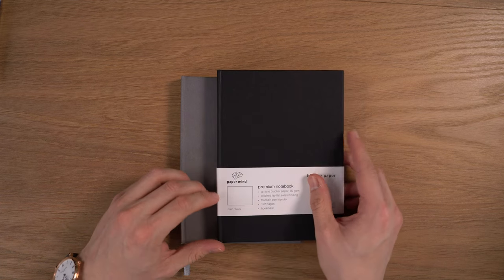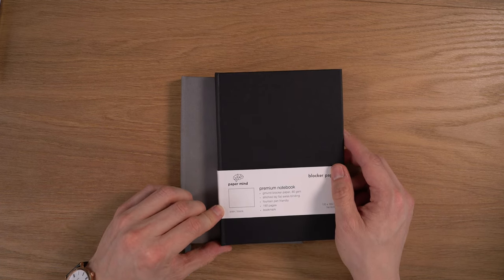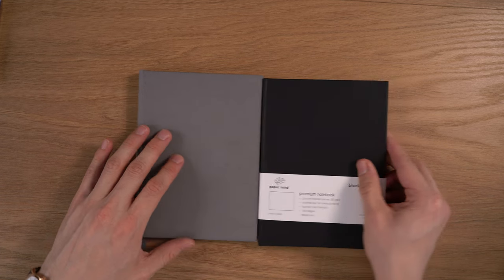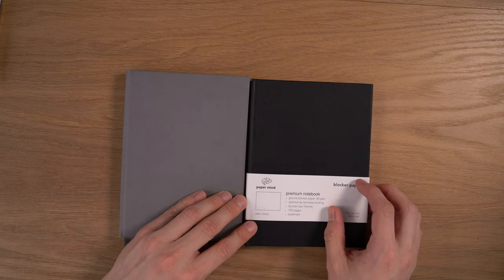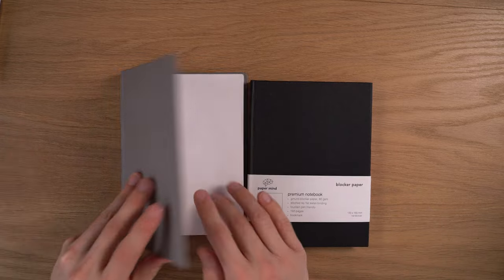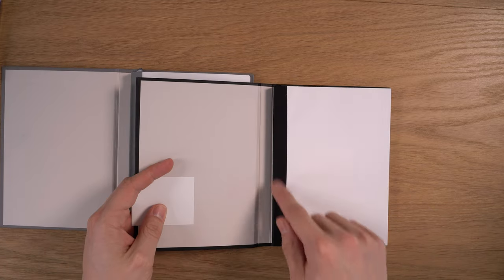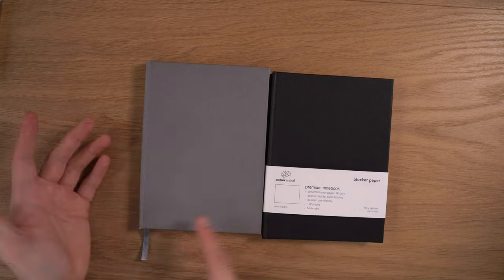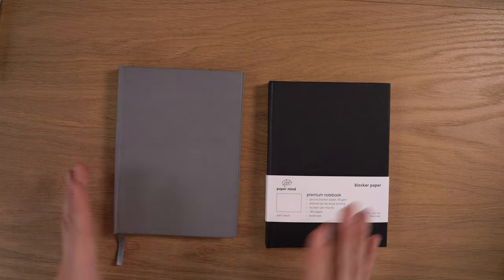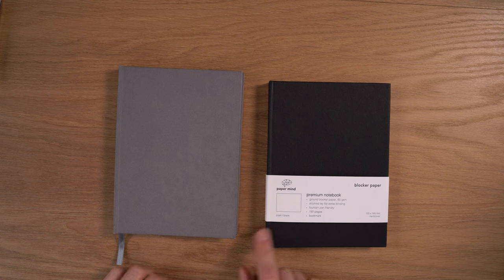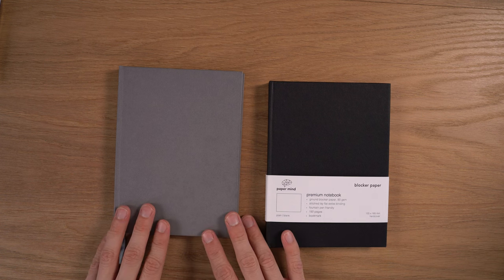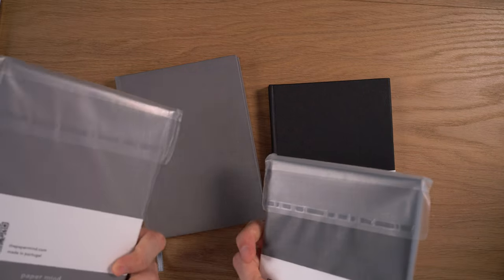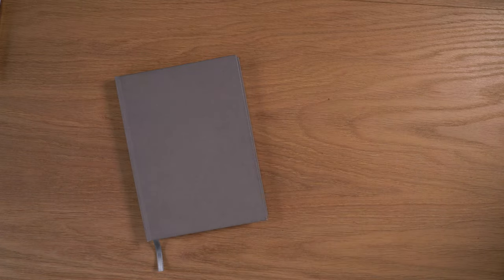Here we have the Paper Mind Blocker Paper Notebook. This is a hardcover notebook, and it comes in two colors, black and gray. We've matched the linen strip on the inside and the bookmark to the cover. They come in blank and dot grid version, and this is what the packaging looks like. I'm really excited about this notebook.